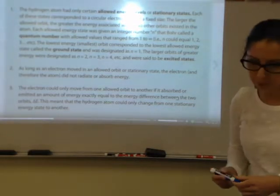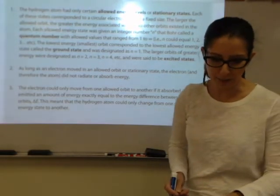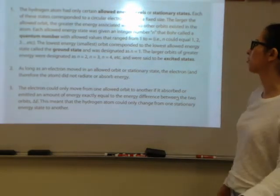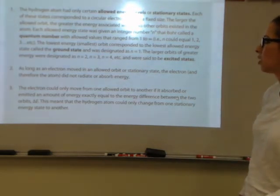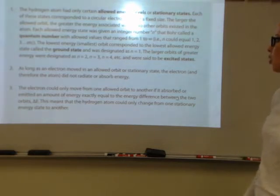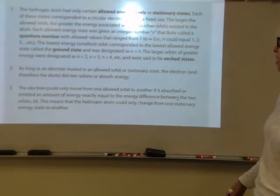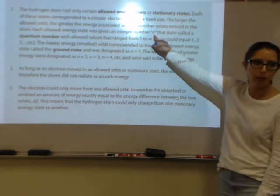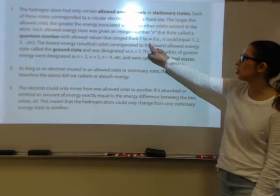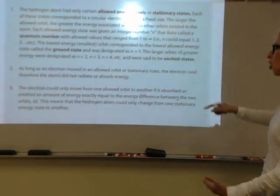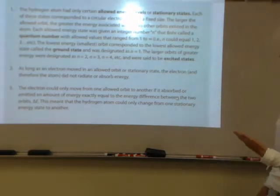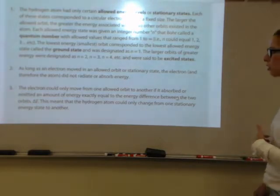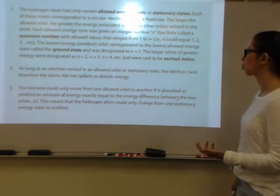A hydrogen atom had certain allowed energy levels or stationary states which corresponded to circular electron orbits of fixed sizes and energies. Every energy state is given a letter N, which Bohr called the quantum number. These allowed values start at one and go up to two, three, four — the further you get from the nucleus.